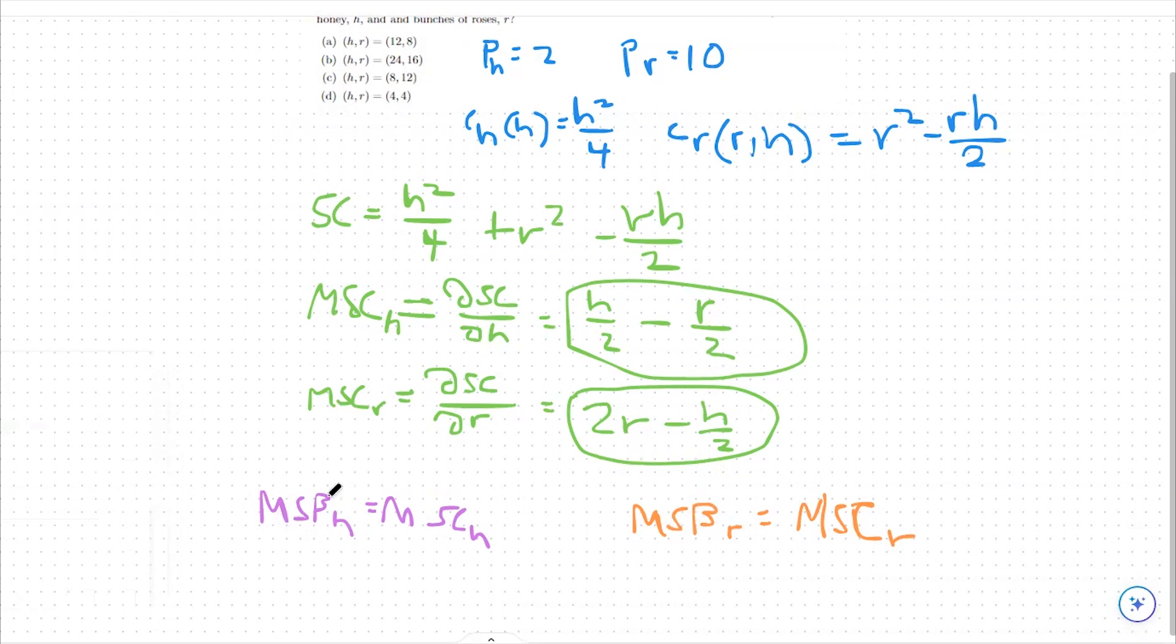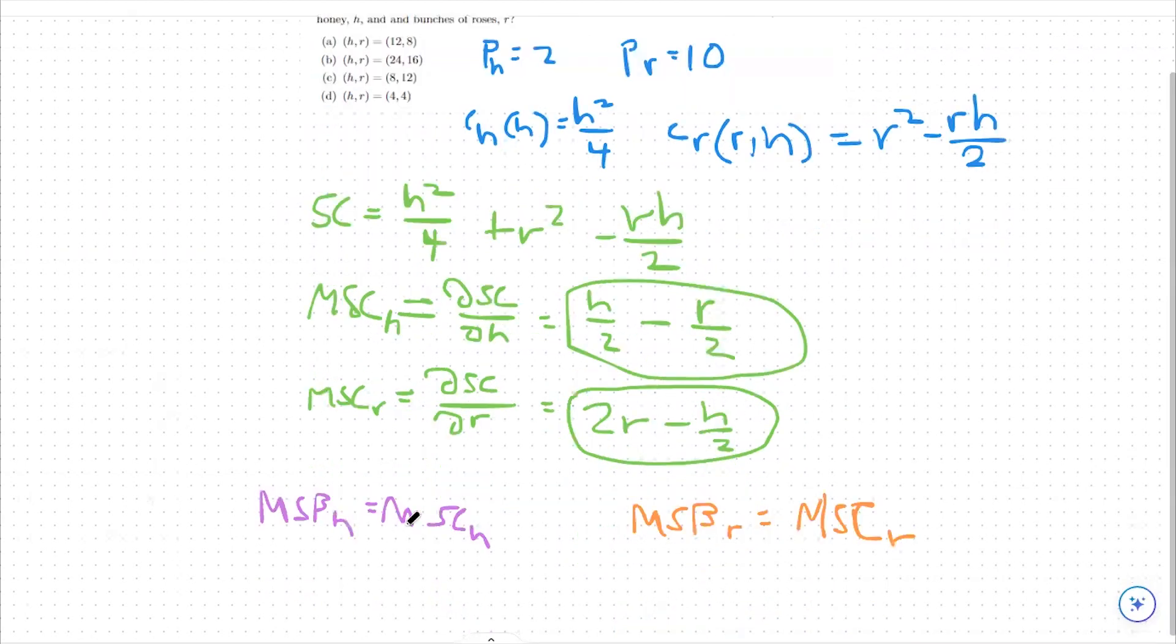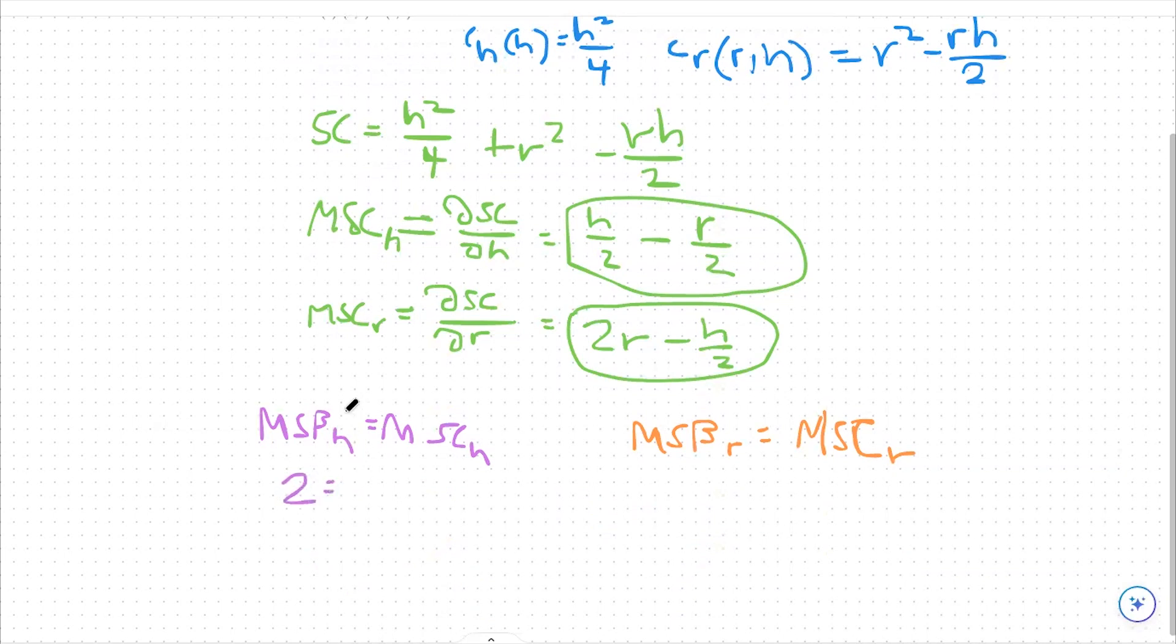So our marginal social benefit is going to be the total benefit that the economy receives per rose that's being sold and per honeypot that's being sold. For honeypots, since there's no other factors here, we're not really looking at our demanders. The only benefit that we can really extrapolate here is the $2 per honeypot that's being sold. So we're generating $2 worth of value per honeypot. So our marginal social benefit for honey is just going to be 2. Each unit of honey that's produced gives the society a benefit of $2. And then we're going to equate that to our marginal social cost of honey, which is going to be h over 2 minus r over 2, which we found before.